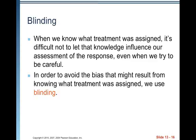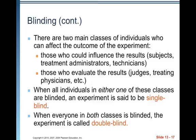Blinding: when we know what treatment was assigned, it's difficult not to let that knowledge influence our assessment of the response. To avoid this bias, we use blinding. There are two classes of individuals who can affect the outcome: those who could influence the results (subjects, treatment administrators, technicians) and those who evaluate the results (judges, treating physicians). When all individuals in either one of these classes are blinded, the experiment is single blind. When everyone in both classes is blinded, it is double blind. Someone does know the assignments, but that person has no interaction with subjects, cannot influence or evaluate the results — they simply hold the key, revealing which subject had which treatment once all data is collected.